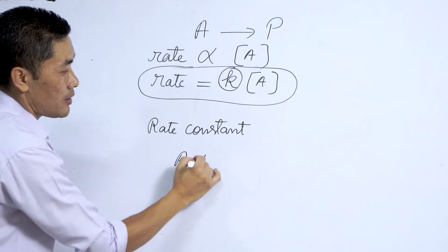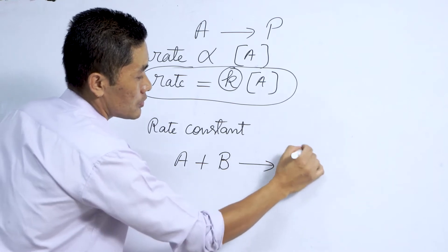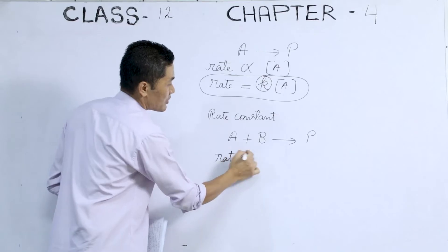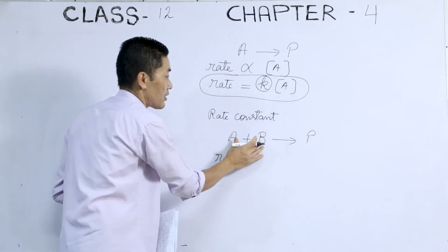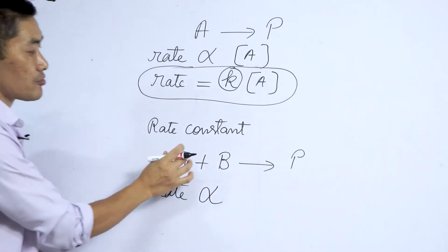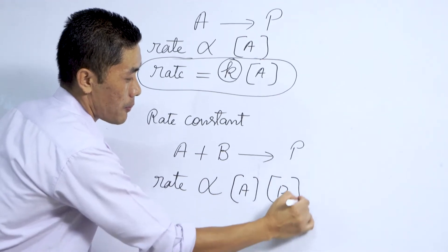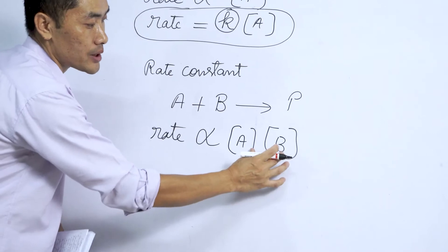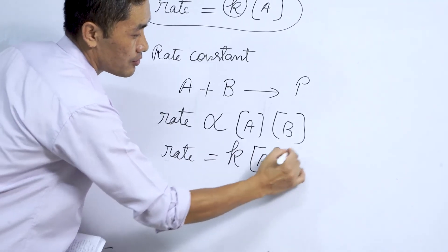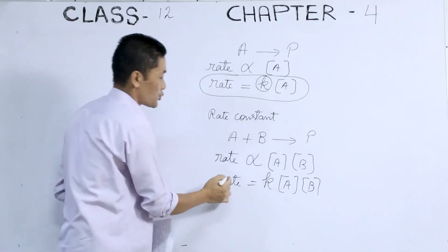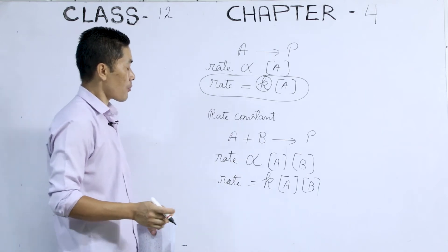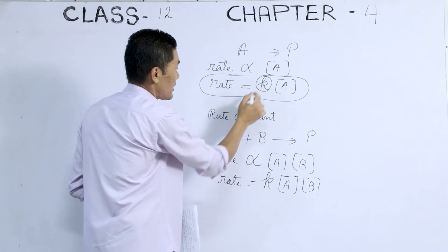If we have two reactants — suppose A and B combine to form a product — then rate does not depend on the concentration of the product; it depends on the concentration of the reactants. In this case, rate is proportional to the product of concentrations of both A and B. Therefore, rate equals K into [A][B]. This is the rate law or rate expression for this reaction. Here, K is called the rate constant.